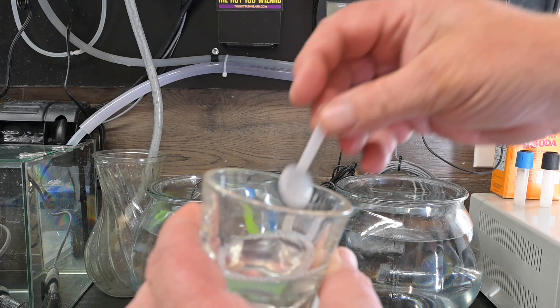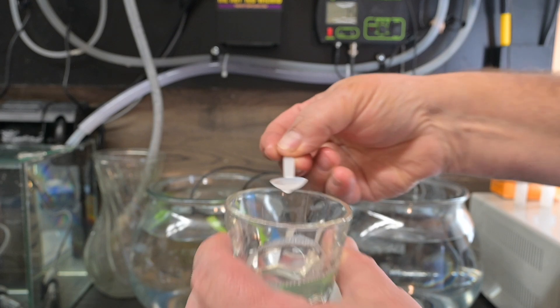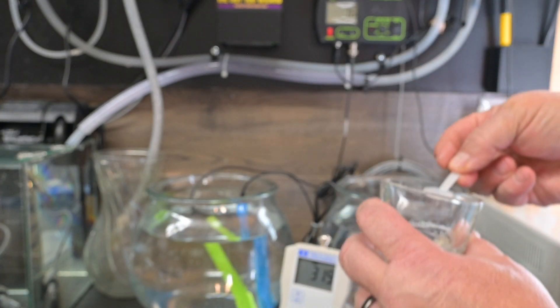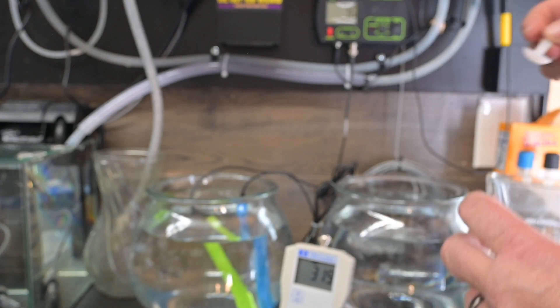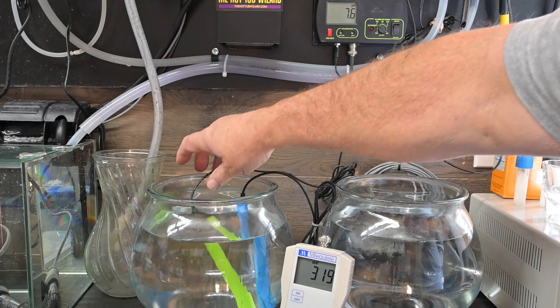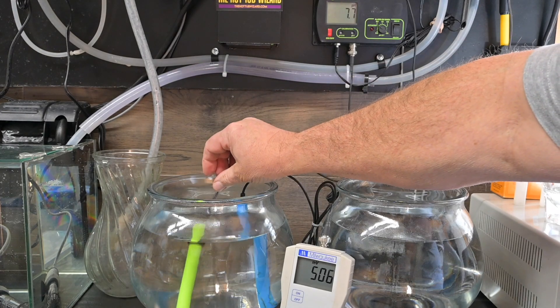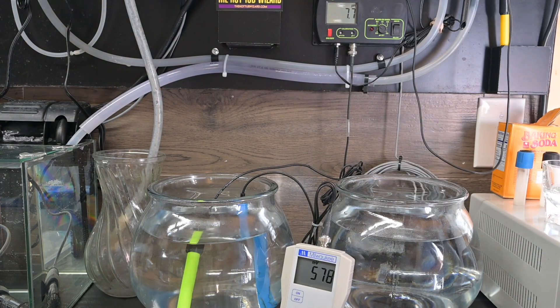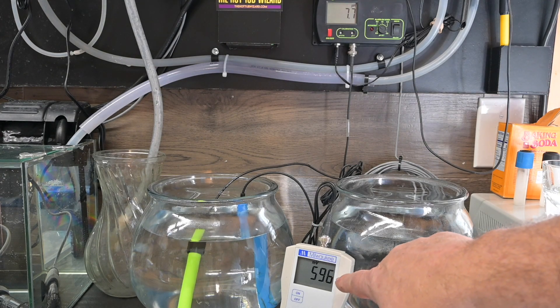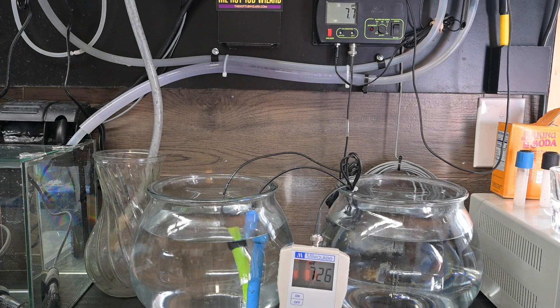We're going to put one level spoonful here - this is liquid so you can't really cheat it - one in here, one in there, and mix it up a little bit. You can see how this has gone up almost to 600 now.